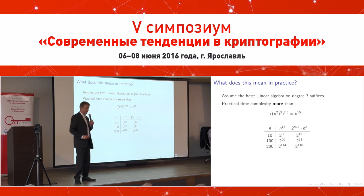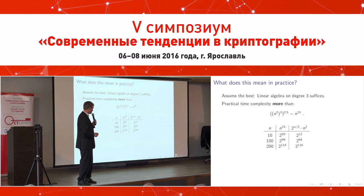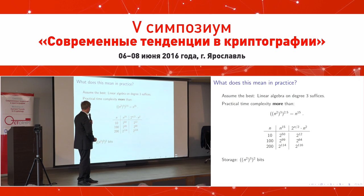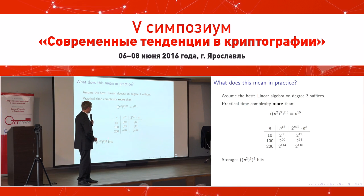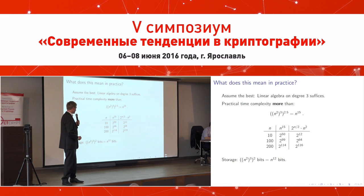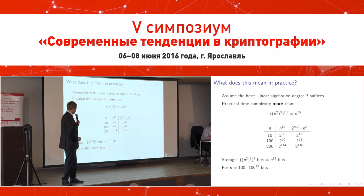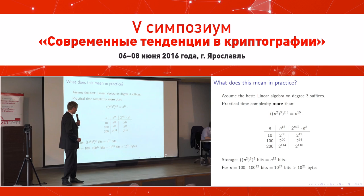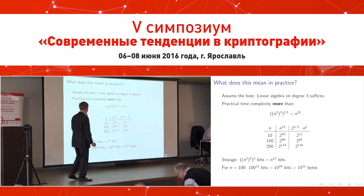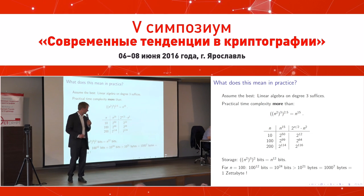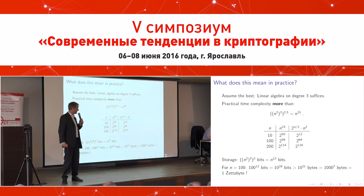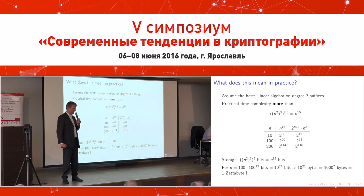But here is the really bad news: consider the storage. You have n² variables, go up to degree 3, and must store a matrix which will probably be more or less dense. The matrix size is n^12. For n=100, that gives 10^24 bytes, which is more than 10^11 bytes — a so-called zetta byte. That's really scary.